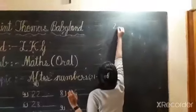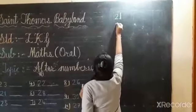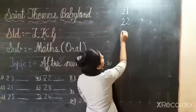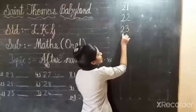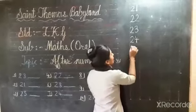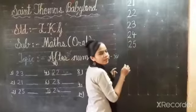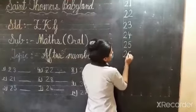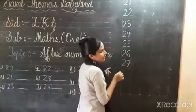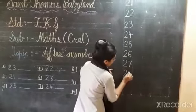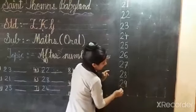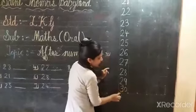So: 2, 1 — 21. 2, 2 — 22. 2, 3 — 23. 2, 4 — 24. 2, 5 — 25. 2, 6 — 26. 2, 7 — 27. 2, 8 — 28. 2, 9 — 29. 3, 0 — 30.